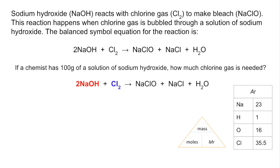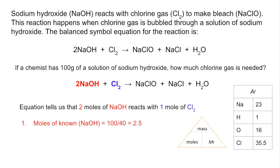There's the equation again, just color coded. We're only interested in the sodium hydroxide and the chlorine. The first thing we're going to do is establish what the equation's telling us: two moles of sodium hydroxide react with one mole of chlorine. Step one, moles of known - so sodium hydroxide is the known chemical. Got a hundred grams of it, so divide that by its Mr. That comes out at 2.5 moles.